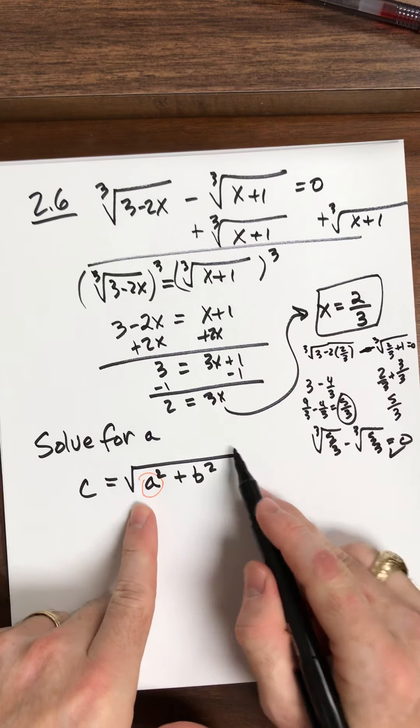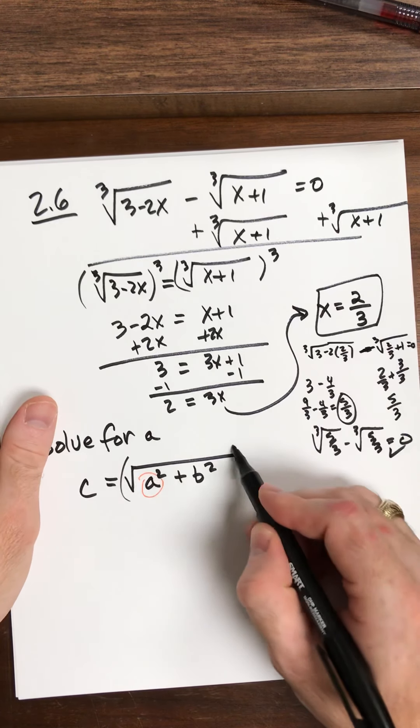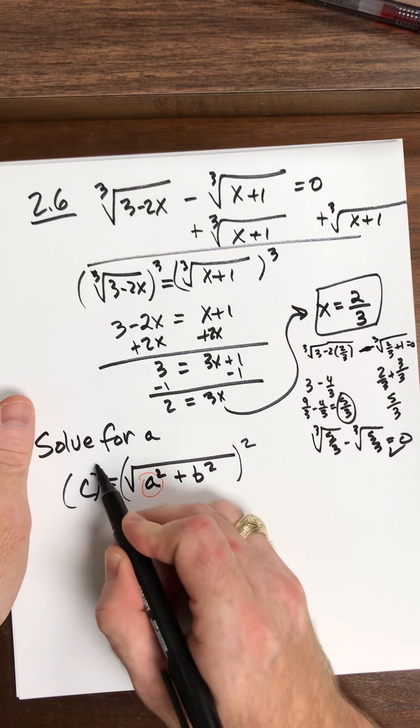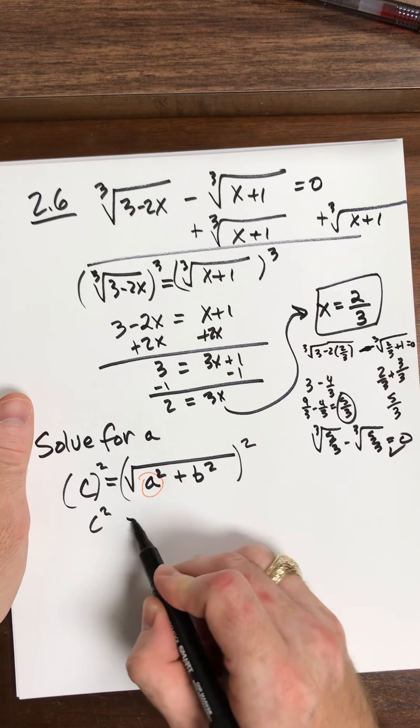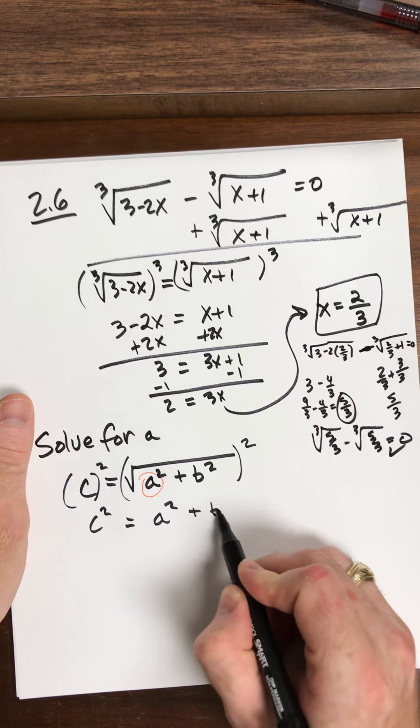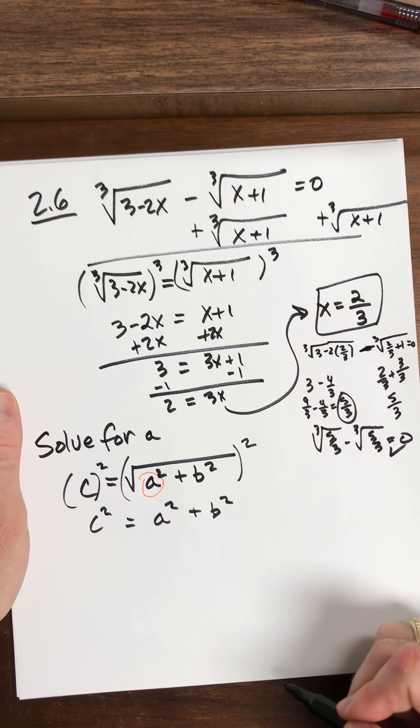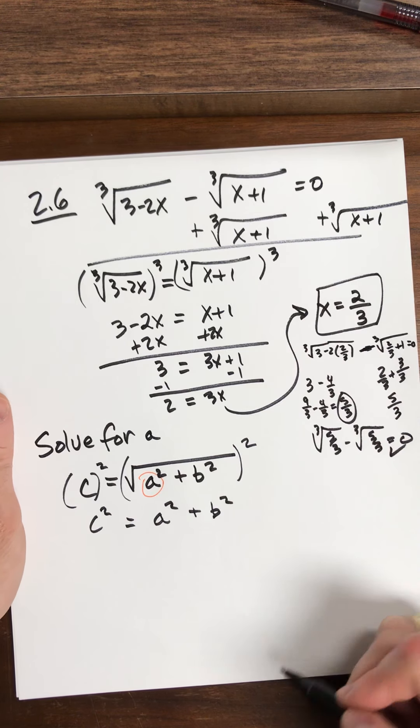What's holding it all together is the square root. So how do I get rid of the square root? I square both sides. I get C squared equals A squared plus B squared. Look familiar? Maybe. Pythagorean theorem. Oh my gosh, right?